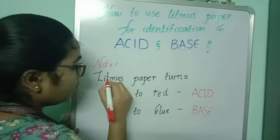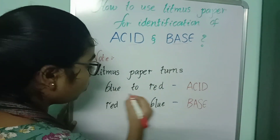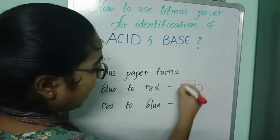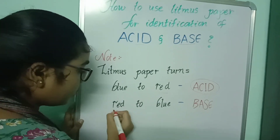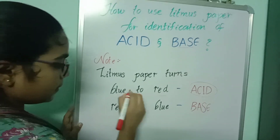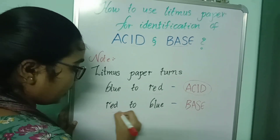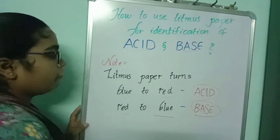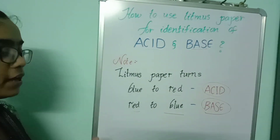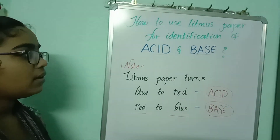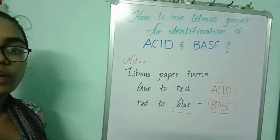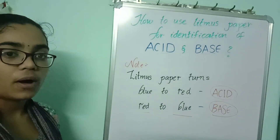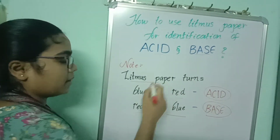If litmus paper turns blue to red, then it is an acid. If litmus paper turns red to blue, then it is a base. If we know these two basic points, we can easily declare whether a substance is acid or base by using the litmus paper.